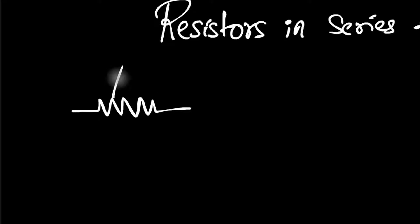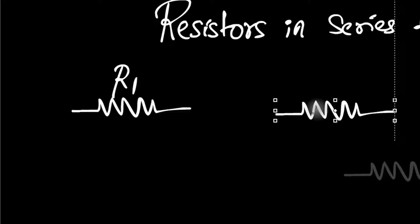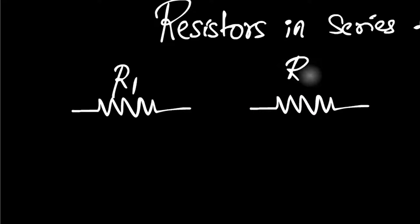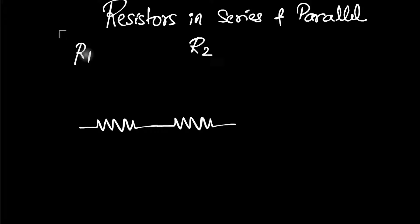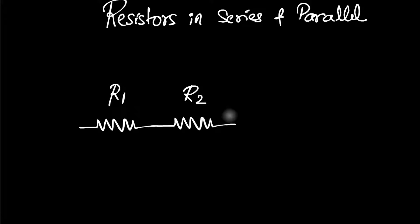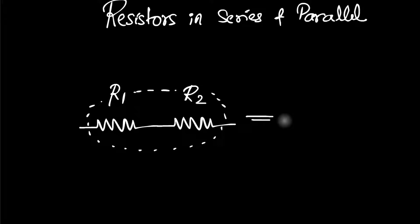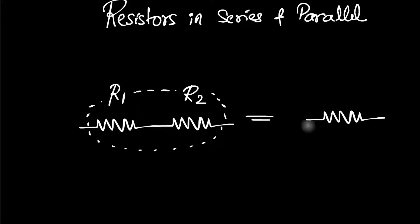Imagine we have a resistor R1 over here, and we have another resistor R2. Now the question is: what happens if I take this resistance and connect it to this resistance end to end? The question is what is the total resistance — the effective resistance. If I were to replace these two resistors with a single resistor, I'm going to call that resistance RS. What is that effective value of RS? That's what we need to calculate.